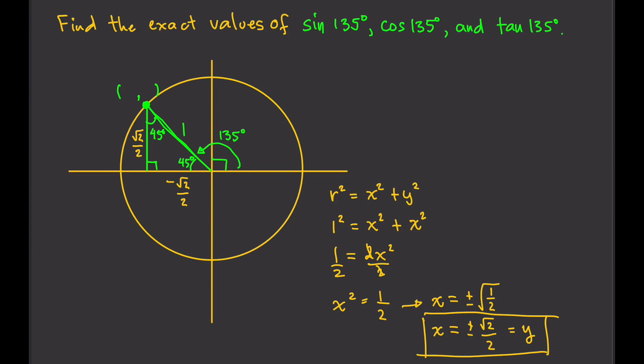So now we have our coordinates. We can just plug that in here. So negative square root of 2 over 2 and positive square root of 2 over 2.